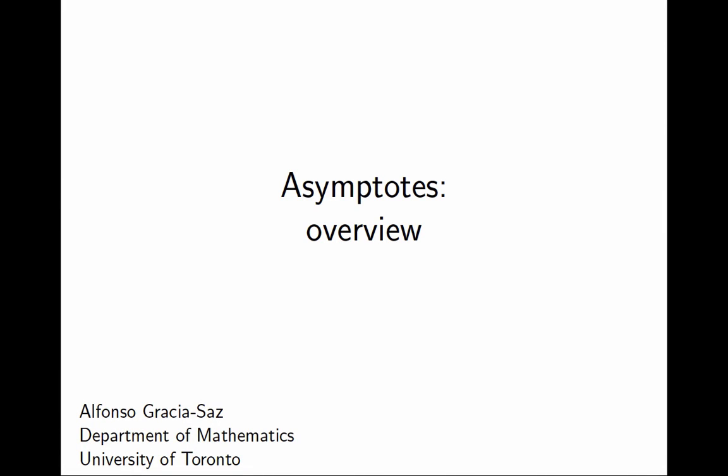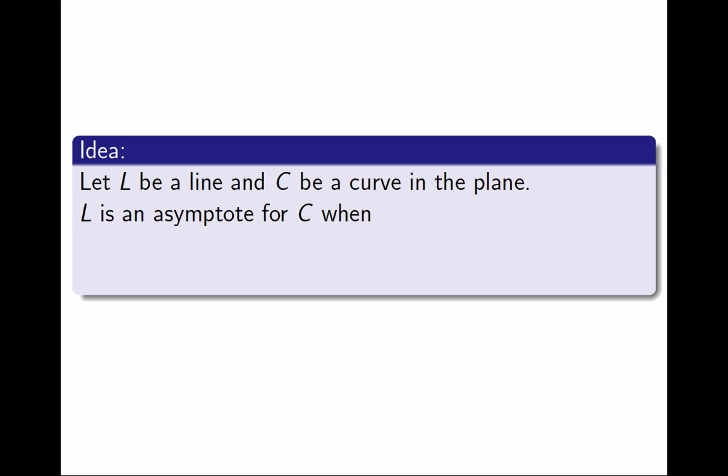In this video, I will explain the geometric meaning of asymptotes and the different types of asymptotes that the graph of a function may have. I'm going to begin with an idea. This will be a bit vague — it's just the idea of what an asymptote is.